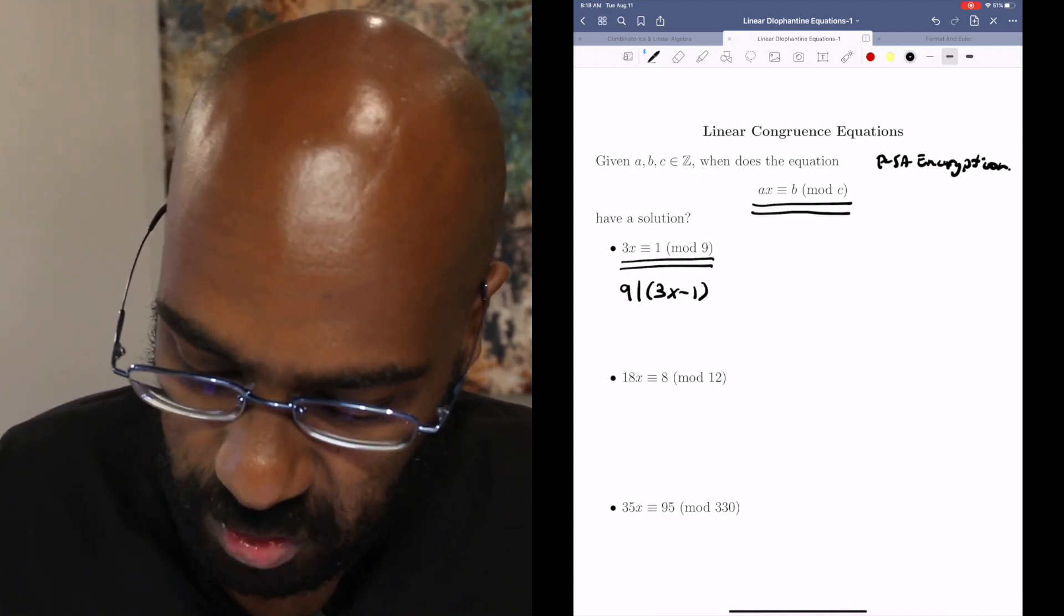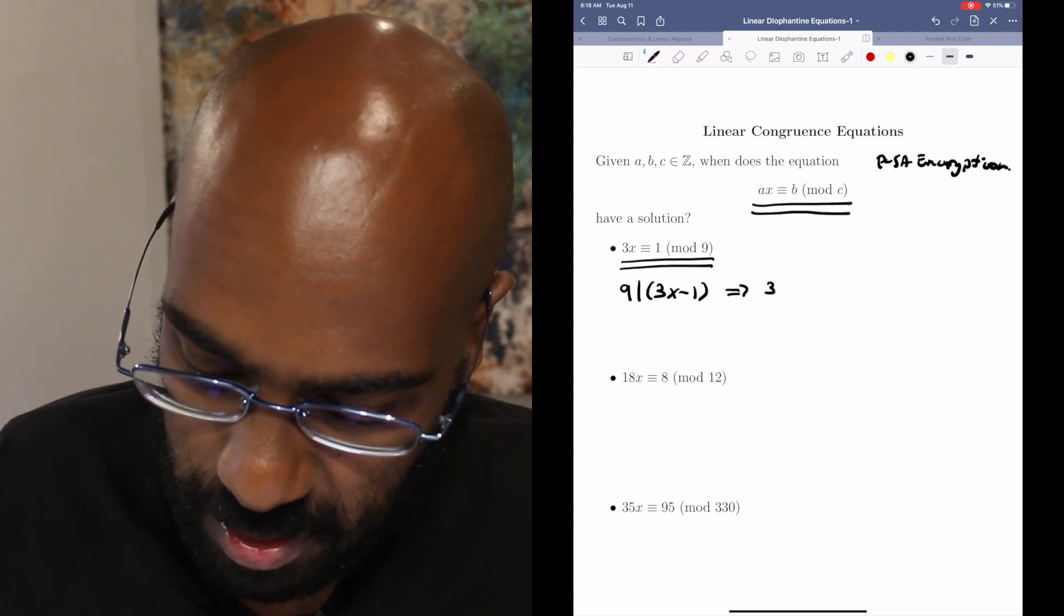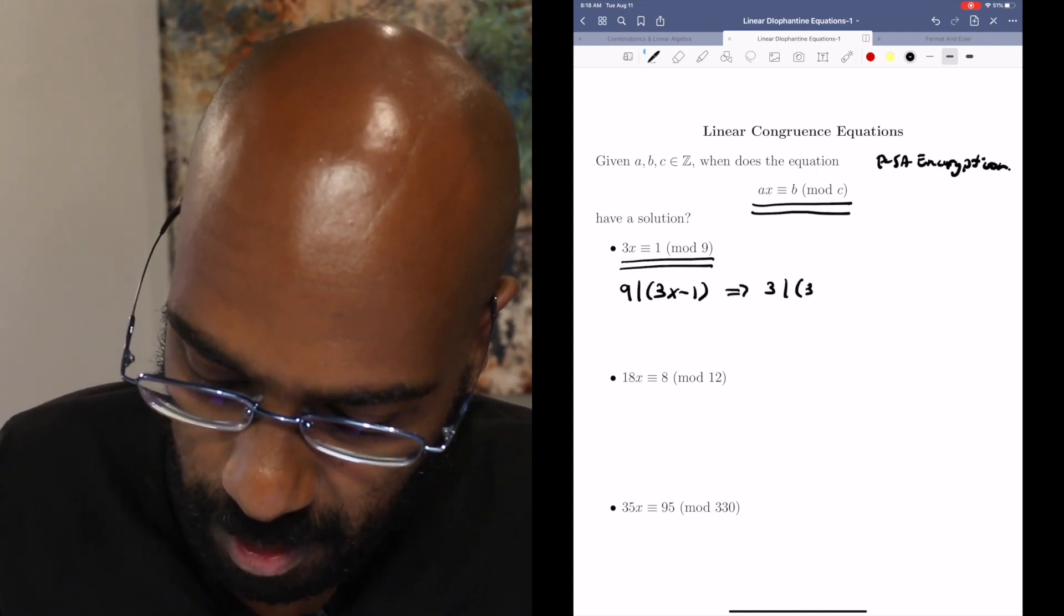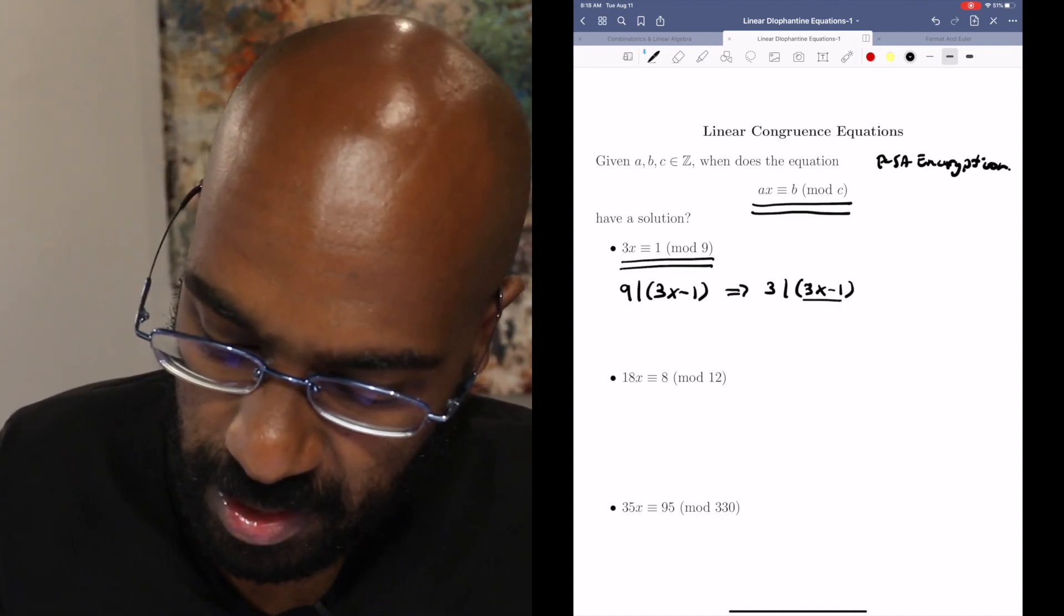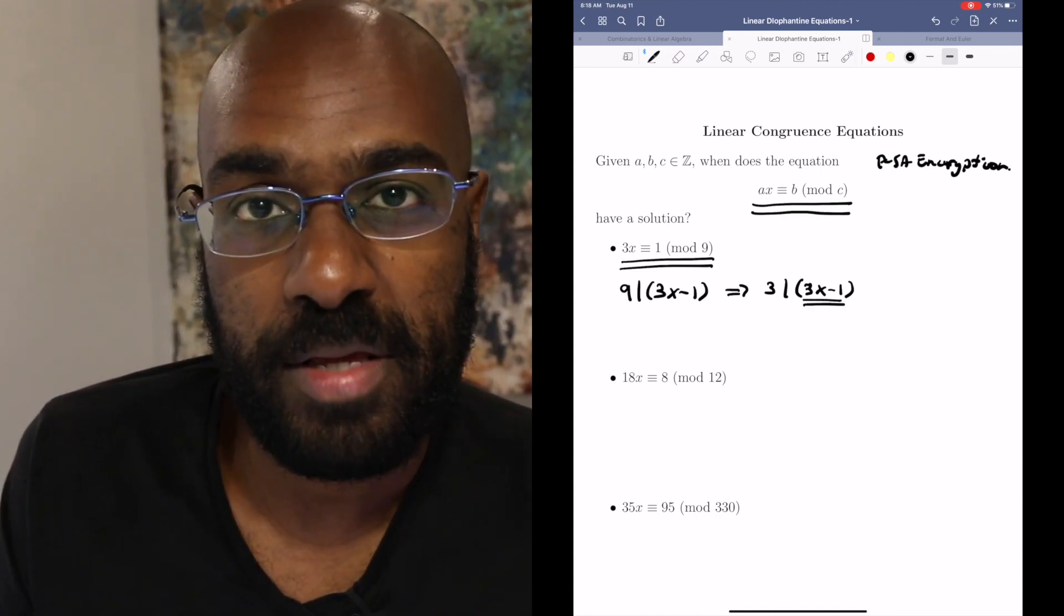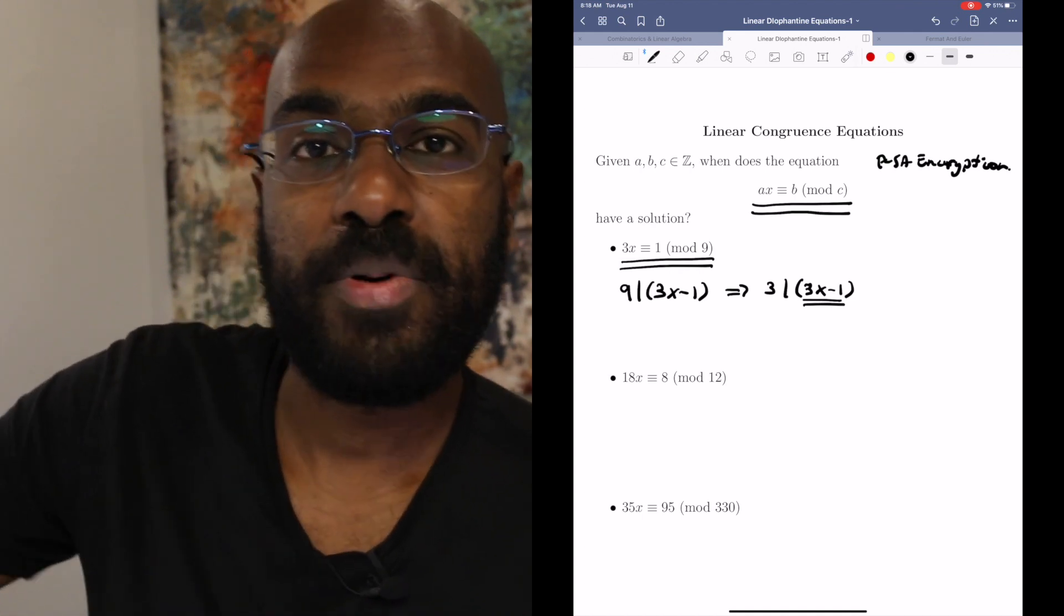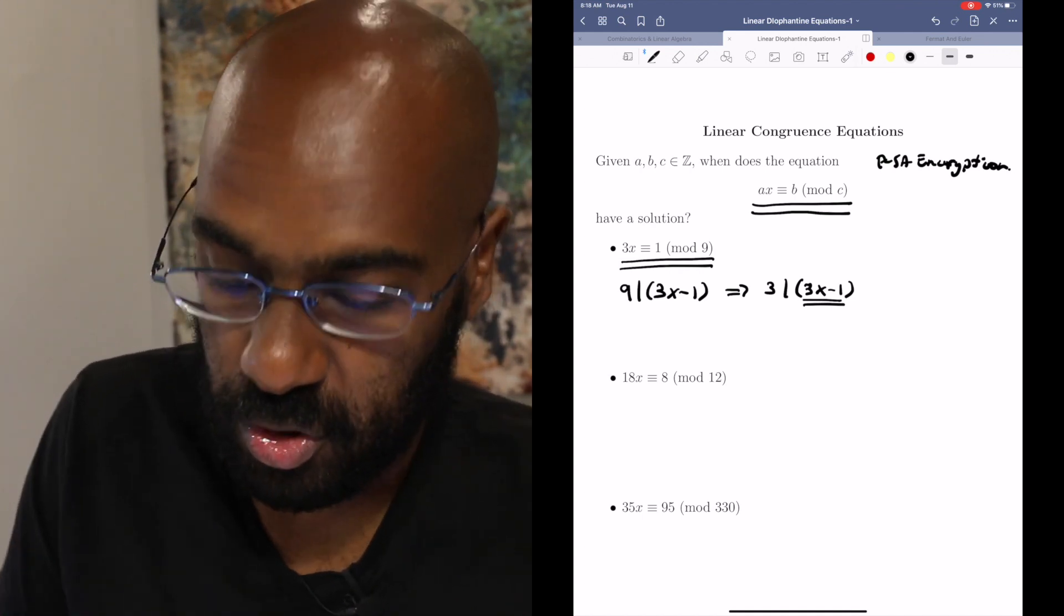Well if 9 divided this quantity, then that would mean 3 divides this quantity. But there's a little bit of a problem with that for a couple of reasons. First of all, this number here is 1 less than a multiple of 3. But multiples of 3 happen every 3 integers. So there's no way this can happen.